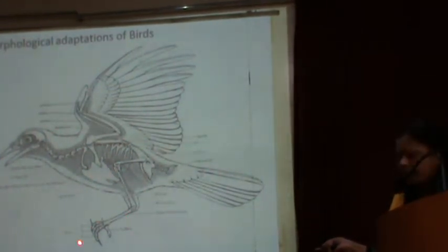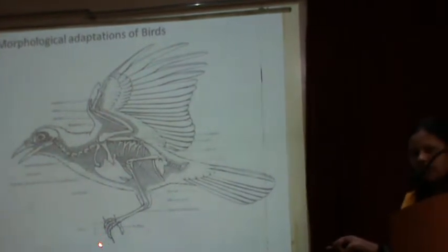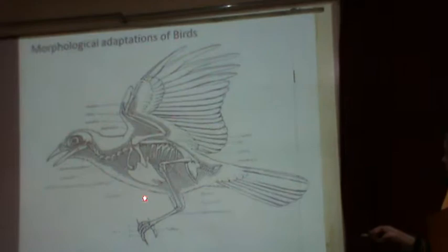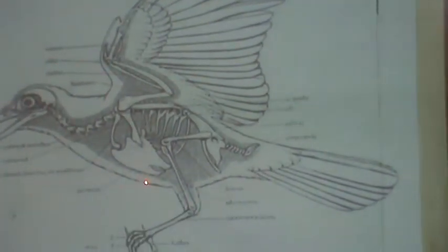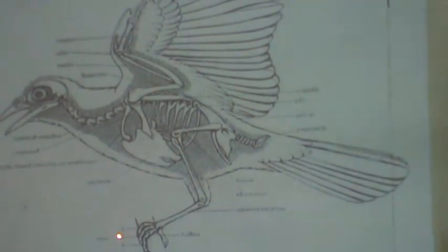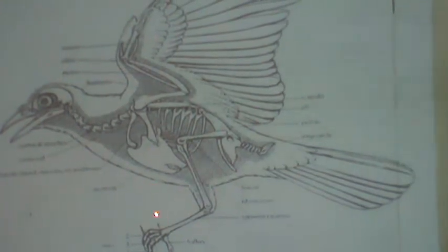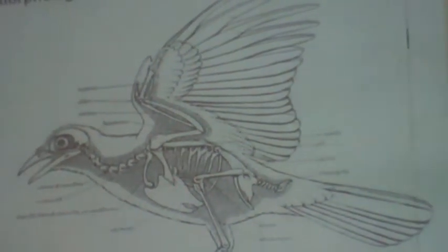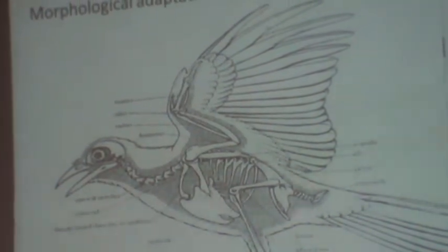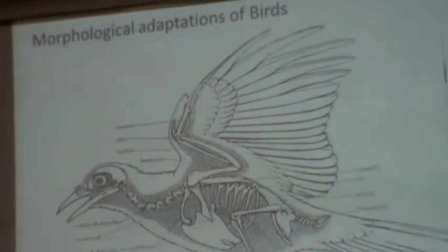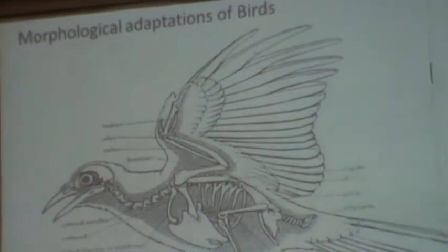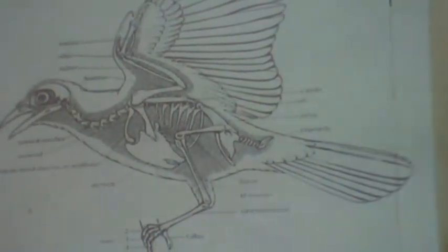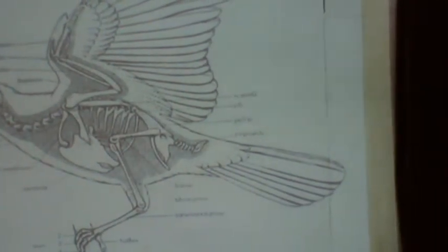The hind limbs are useful for walking, jumping, and perching. These hind limbs are shifted towards the centre of the body to balance it — this is a necessary adaptation. Each hind limb has four digits or four toes: one toe is backwardly directed and three toes are forwardly directed. This arrangement is useful for perching or holding a branch.